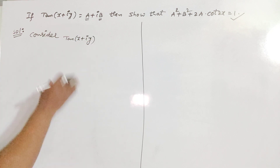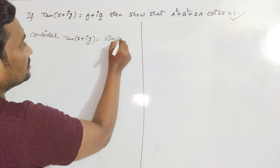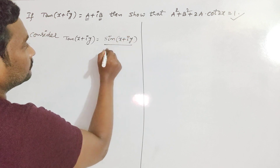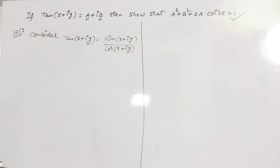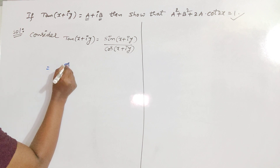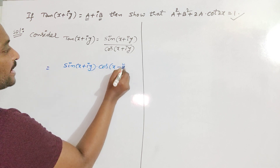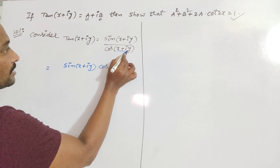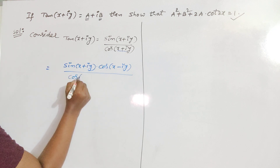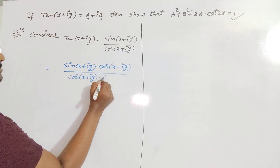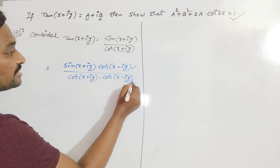Already in the earlier videos, we are finding the real and imaginary parts of tangent. Tan can be written as sin divided by cos. We have to rationalize the denominator. So sin(x + iy) — we should multiply with cos(x − iy), since in the denominator we have cos(x + iy). That's why we multiply with cos(x − iy) and divide by the same term.